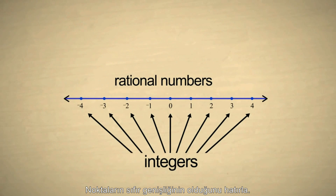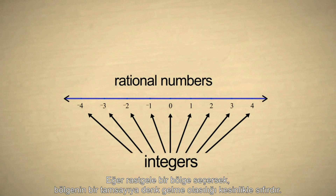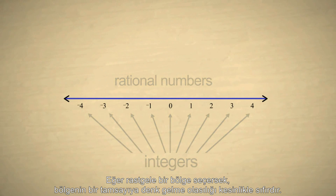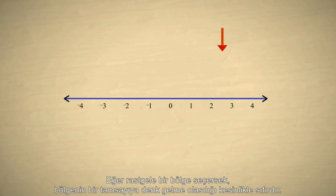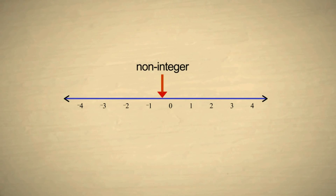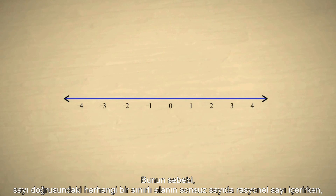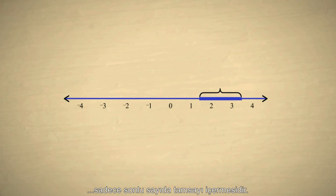Remember that points have zero width. So if we pick a purely random location, the chances are essentially zero that that location will correspond exactly to an integer. This is because any finite interval on the number line contains an infinite number of rational numbers, but only a finite number of integers.